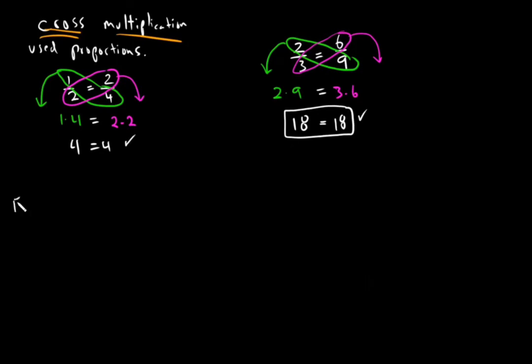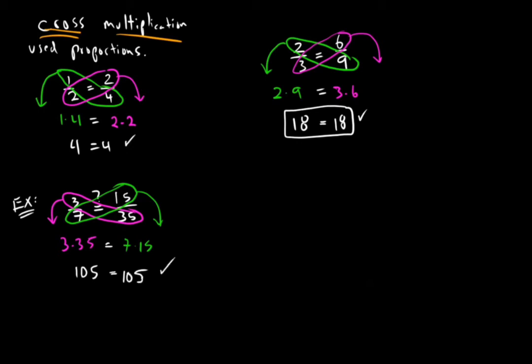Try another example. A little bit larger numbers so you can see how it works with larger numbers as well. So let's say I have 3 sevenths. Is it equivalent to 15 thirty-fifths? Well, again, you don't want to draw this out because it's too large, so you can use cross multiplication. You create a cross, and you multiply. So on this side, 7 times 15. Bring down the equal sign. On the other side, 3 times 35. Multiply those numbers. So this will be 105 equals 105. So this statement says 105 equals 105. That is true. So yes, 3 sevenths equals 15 thirty-fifths.